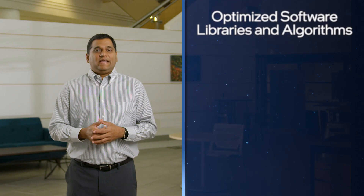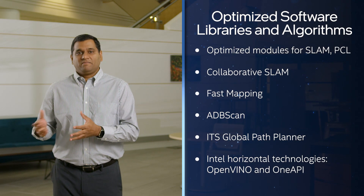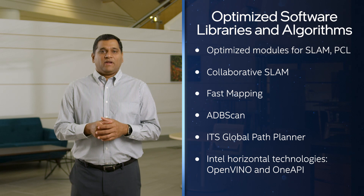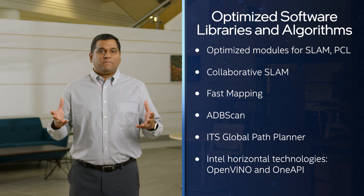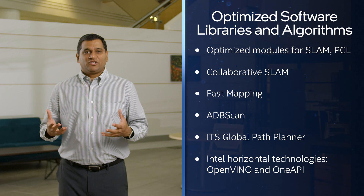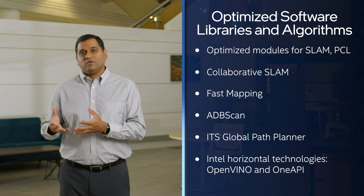The foundational software provides communication infrastructure for the robot to communicate with the edge server. The next area of focus is the collection of optimized software libraries and algorithms intended to improve the performance of existing software stacks. These optimized software libraries and selective algorithms are not only performance-tuned for Intel architecture, but also fill needs not addressed by current open source solutions.